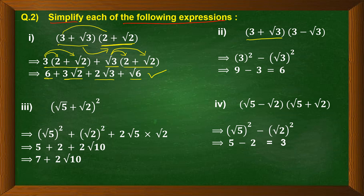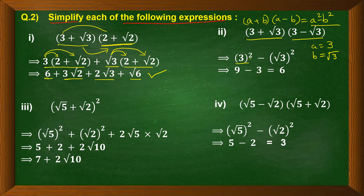The second part is (3 + root 3)(3 − root 3). This resembles the identity a plus b into a minus b equals a squared minus b squared, where a = 3 and b = root 3. Applying the identity: 3 squared minus (root 3) squared equals 9 minus 3, which equals 6. So the answer is 6.